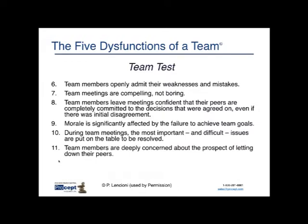Team test eleven: team members are deeply concerned about the prospect of letting down their peers. People in more functional-area organizations tend to be concerned about their department and role there. The more you move toward a projectized or strong matrix organization, the more you see team members being concerned about whether they've let down people on the project team — and less so about how they're viewed by their functional manager. This reflects where you are on the organizational spectrum.